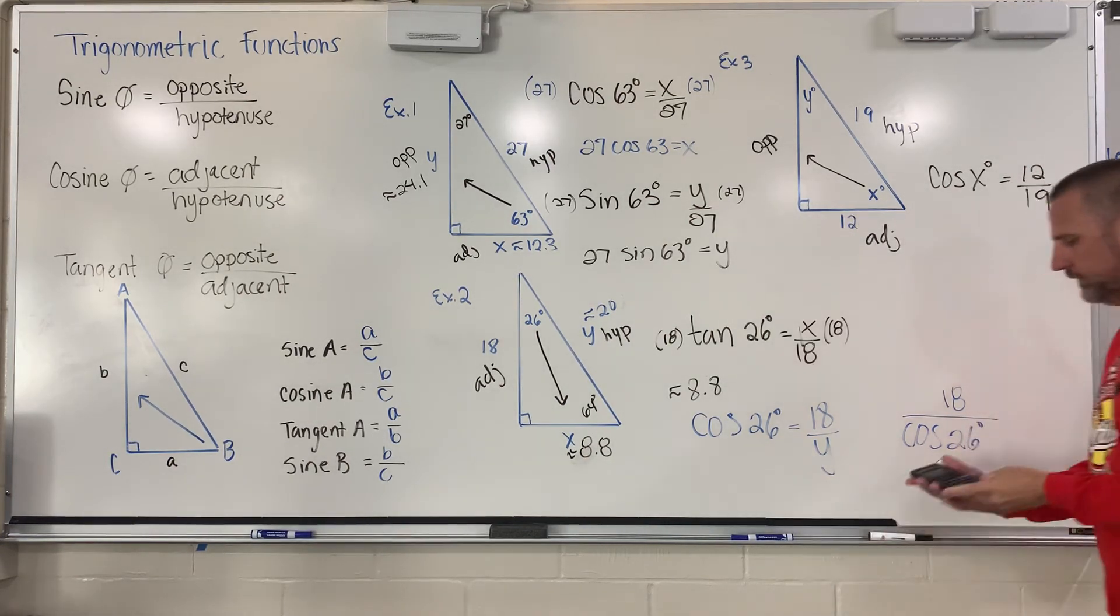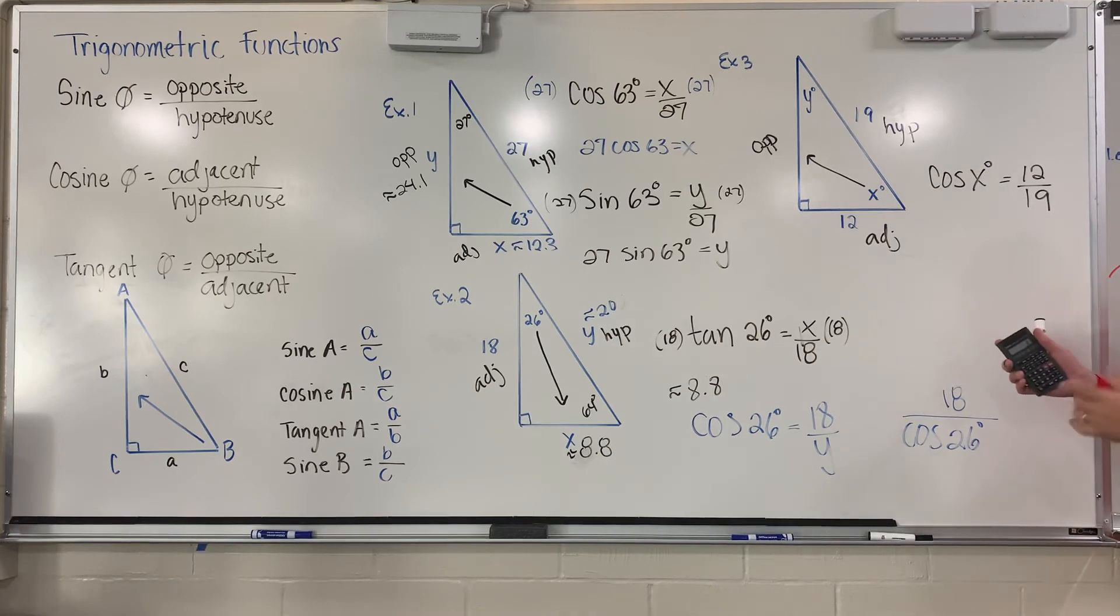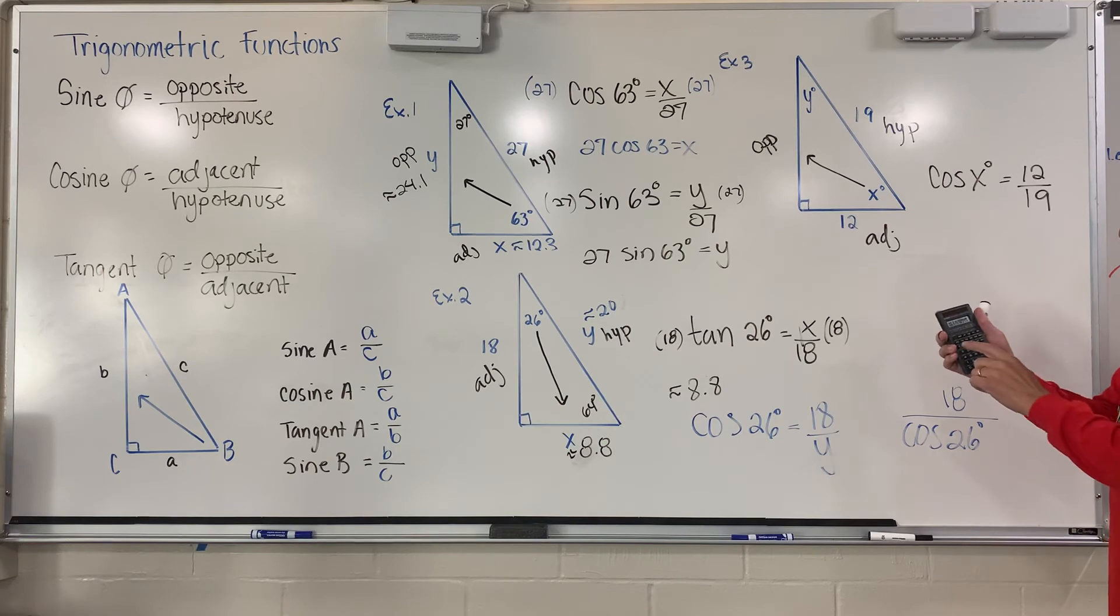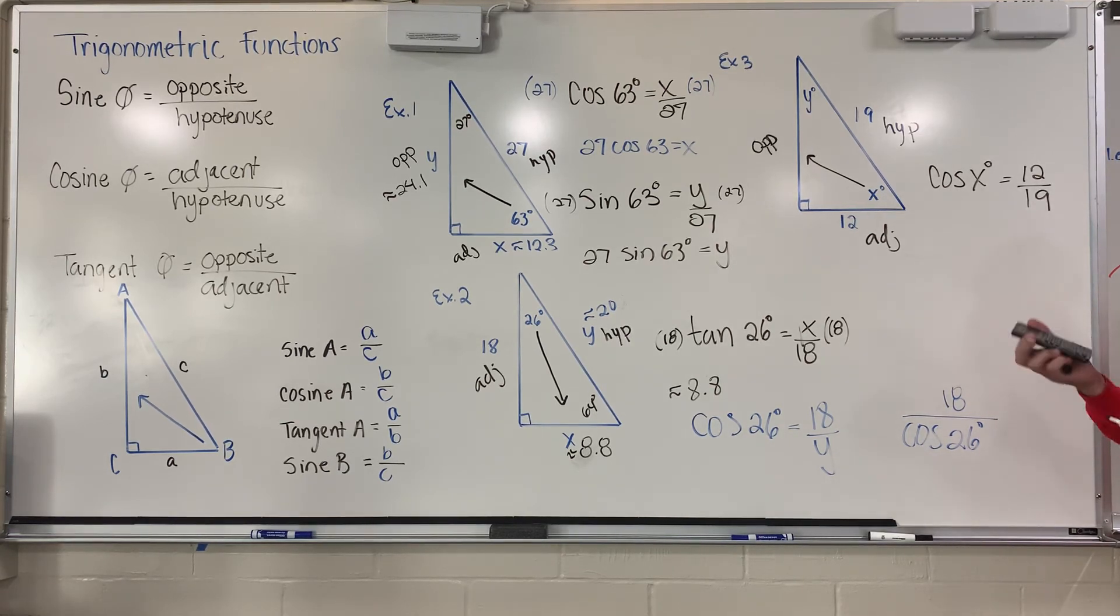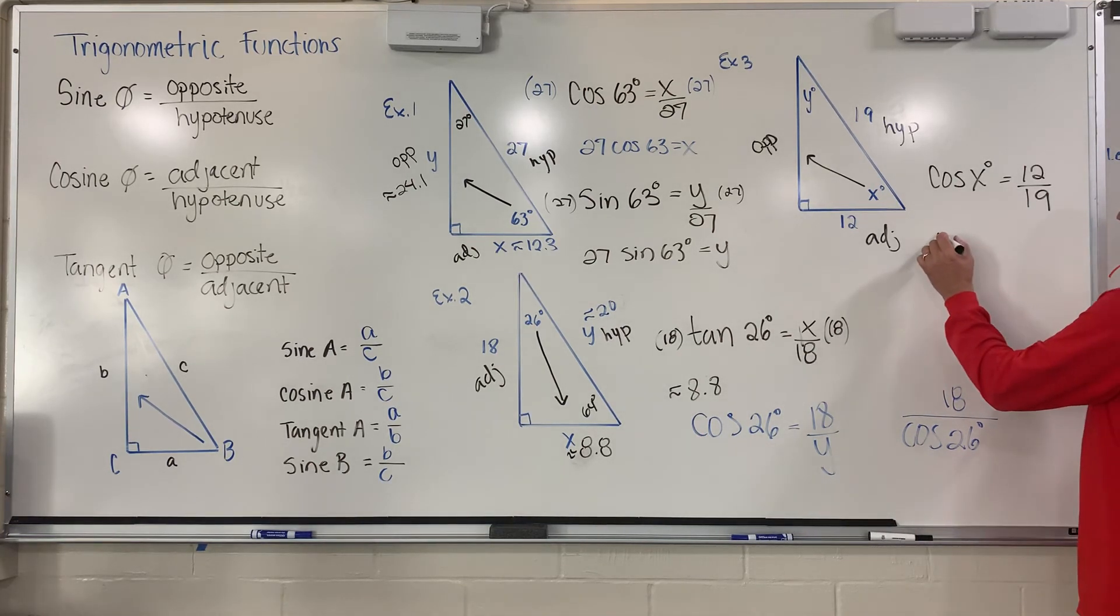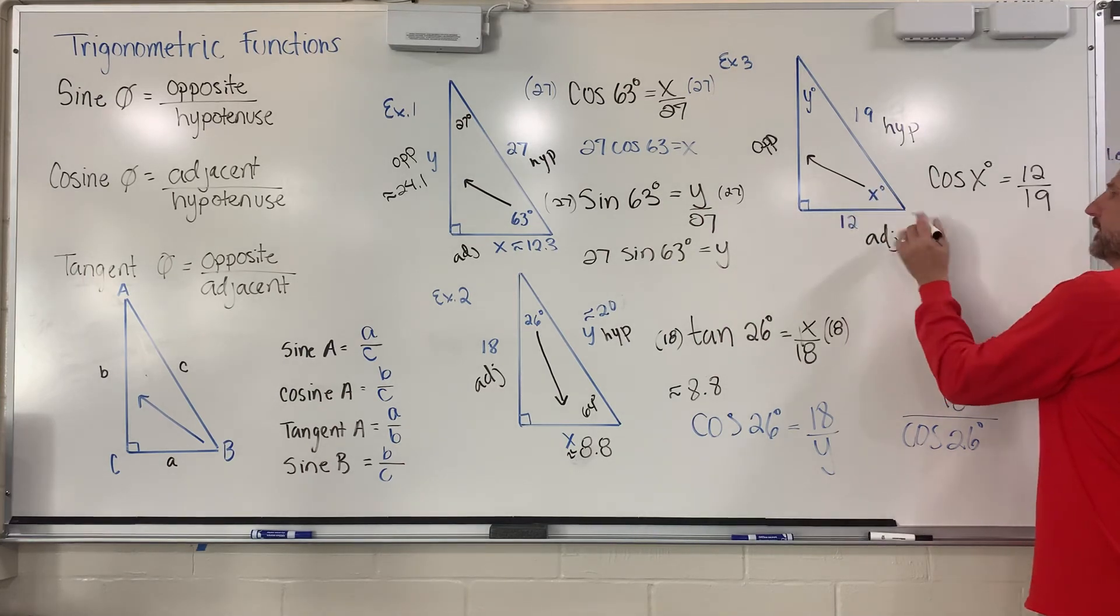On a calculator, the way you do that is you take and you divide 12 by 19, and you make sure to hit enter at this point. Now, you get a number on it. I got 0.63, blah, blah, blah. This is not the angle. You have to use a button called an inverse. And what you do is you hit shift, and then you hit cosine, which is inverse, meaning I want it to work the function backwards. I have the numbers. I want the angle. And when I do that, I get the answer of approximately 51 degrees. And we always round angles to the nearest whole number. So x is approximately 51 degrees.